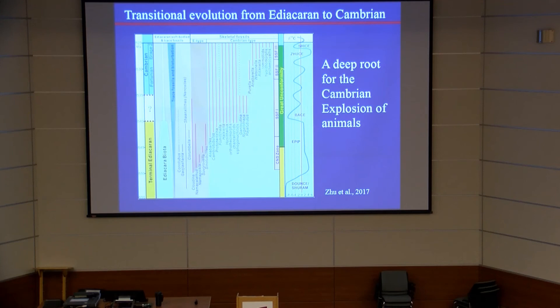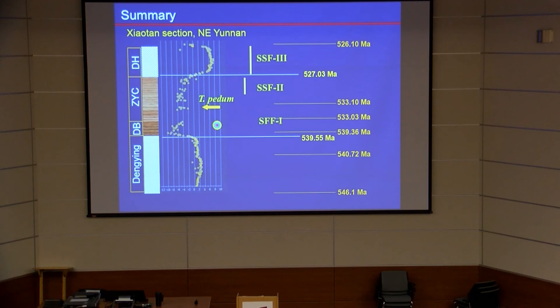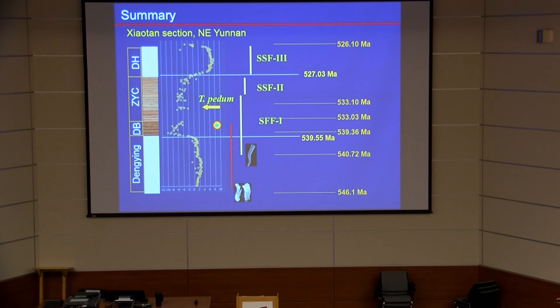Our conclusion is that there should be a transitional evolution of skeletal animal fossils, meaning we think there should be a deep root for the Cambrian radiation of animals. Putting the Siberia section together with South China: in Siberia, Cambrian-type small shelly fossils moved down to this level, and Cloudina Ediacaran-type shelly fossils moved up to this level, making the base excursion interval very distinctive. We bracket all these things in this level, which creates a really big problem for how to define the base of Cambrian if you want to use another tool.